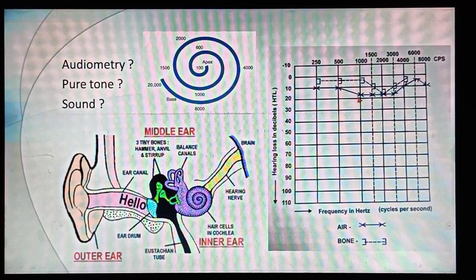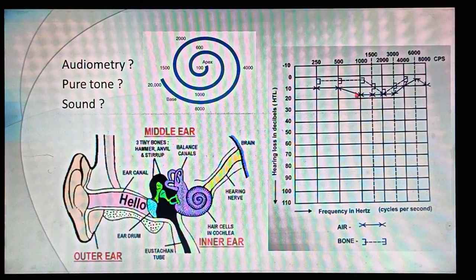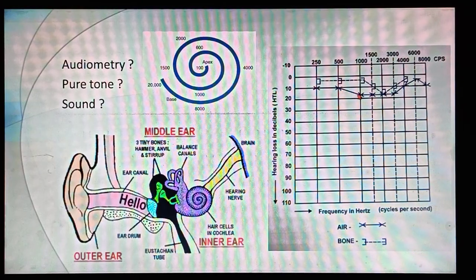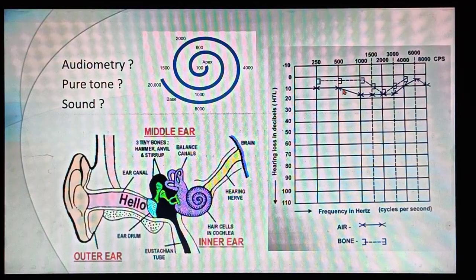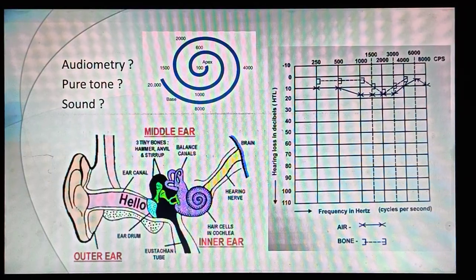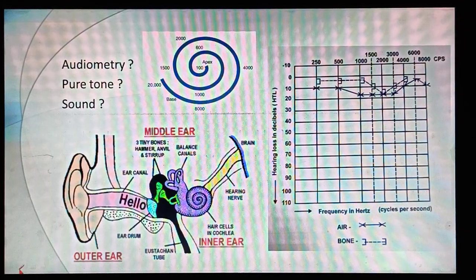These two pathways — air conduction and bone conduction — are what we check in pure tone audiometry when hearing impairment is suspected. We will also go over the symbols used in an audiometric graph.